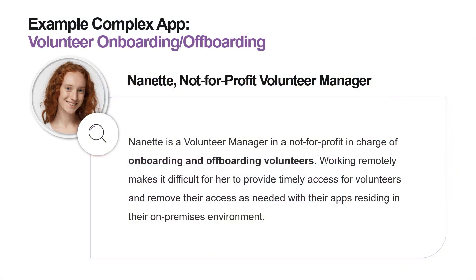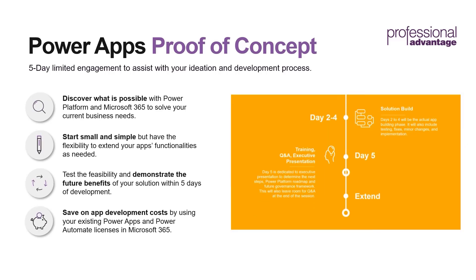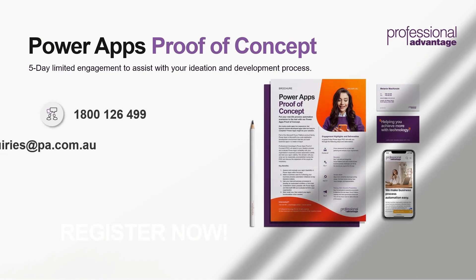As you can imagine, this entire process has reduced — possibly by hours if not days — the back and forth you would normally have with IT to create accounts and provide permissions. Being online means our work-from-home volunteer manager does not have to connect to a VPN to create anything. All they need is an internet connection, quickly fill in the details on a Power App, or even from their phone — that's all it takes.